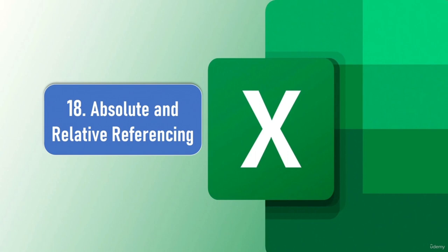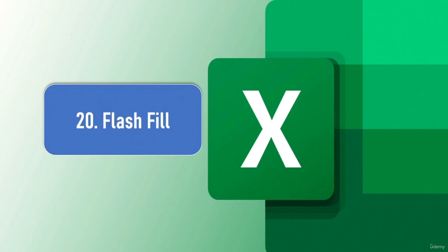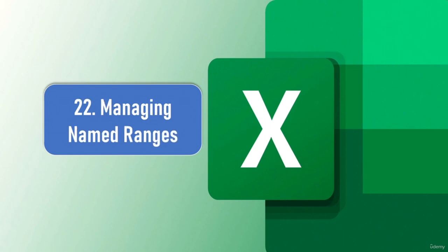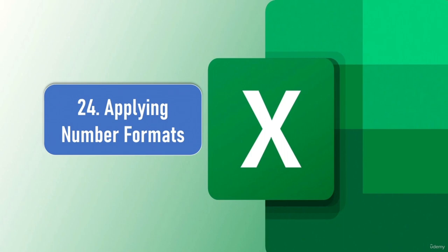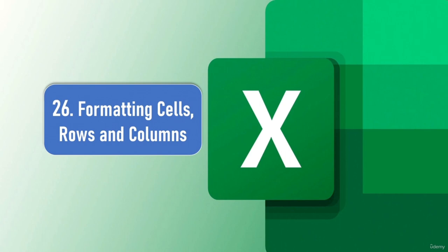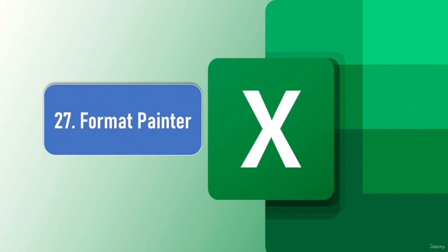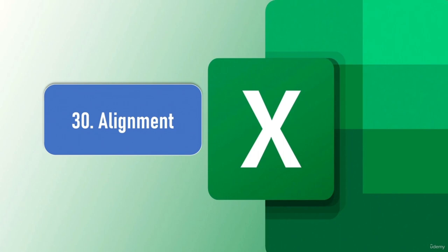I will explain the difference between absolute and relative referencing, and the difference between autosum and autofill. We'll talk about flash fill, named ranges, how to manage and use named ranges, how to apply number formats, date and time formats, formatting cells, rows and columns. I'll tell you all about Format Painter and how to use it in real-life situations, working with rows, columns, and cells, alignment, and finally themes in Excel.